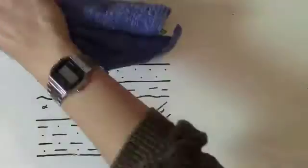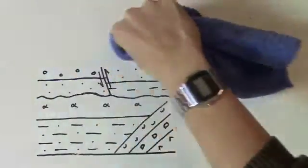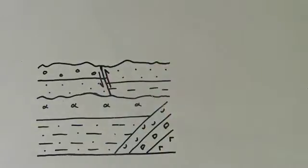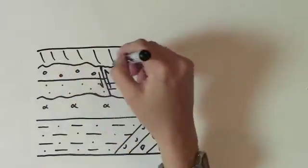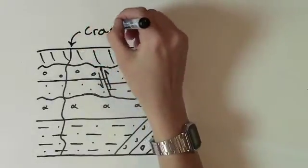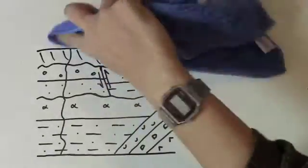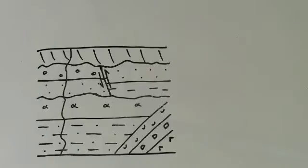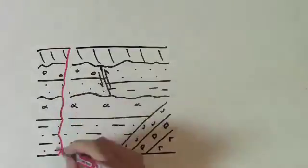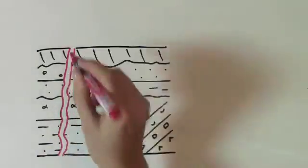The overhang created by this fault is particularly susceptible to erosion, which will occur creating another uneven surface in the rock record. On top of this, we have more deposition, and after that, a crack develops in the entire rock sequence. Eventually, this crack widens, and magma is able to intrude and cool, forming a dike, which cuts through the whole sequence that is there at this time.